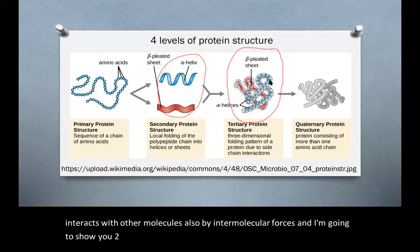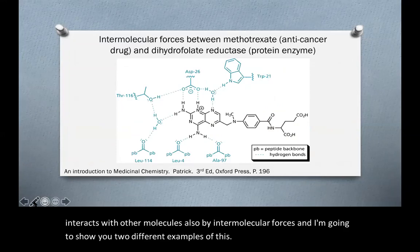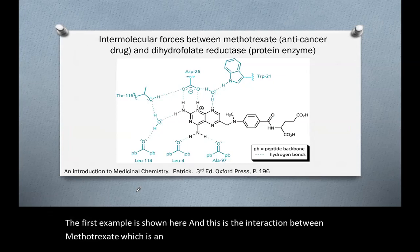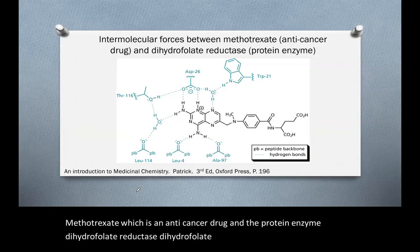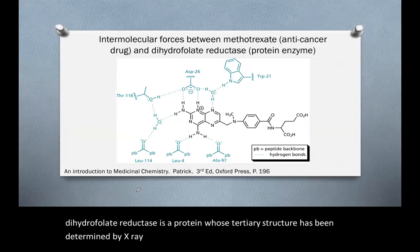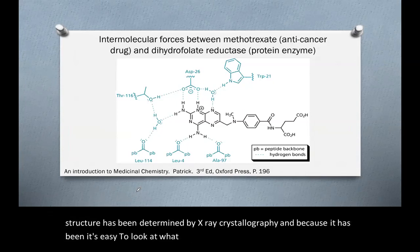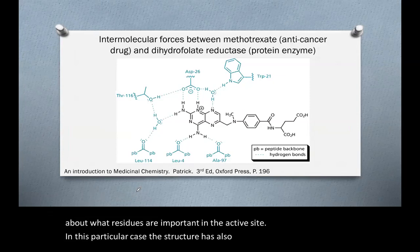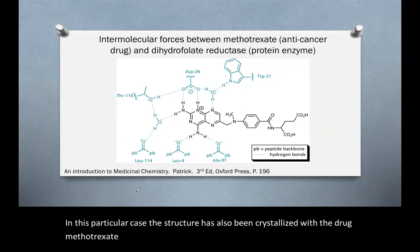I'm going to show you two different examples of this. The first example is the interaction between methotrexate, which is an anticancer drug, and the protein enzyme dihydrofolate reductase. Dihydrofolate reductase is a protein whose tertiary structure has been determined by x-ray crystallography, making it easy to examine the active site and the important residues within it. In this particular case, the structure has also been crystallized with the drug methotrexate bound to it.